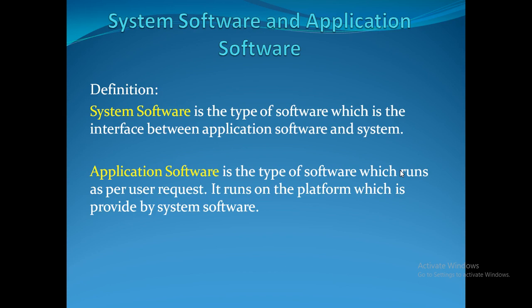Softwares are of two types: system software and application software. System software is a type of software which is an interface between application software and the system.